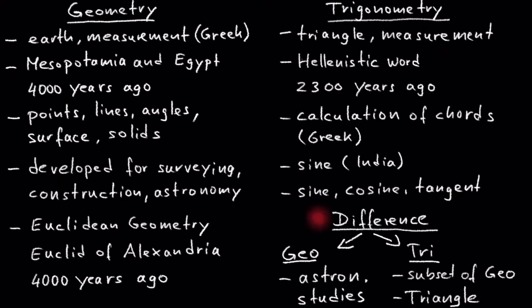The main difference between geometry and trigonometry is that trigonometry emerged from geometry being applied to astronomy. Trigonometry is a subset of geometry dealing with the properties of one of the shapes in geometry called the triangle. A triangle is a plane figure with three straight sides and three angles.